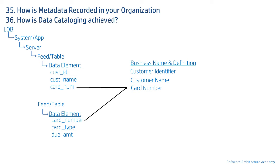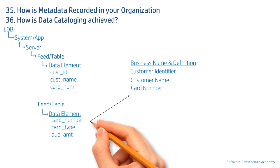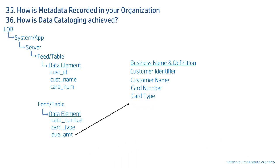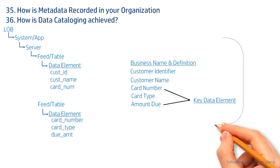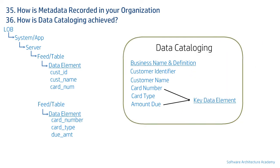A particular data element can exist in hundreds of instances across systems, all having the same business meaning. It is wise to map all these data elements to one business name rather than creating multiple business names. An important exercise is identifying key data elements — known as critical data elements in some organizations. These are fields important to the business or required to be reported to a regulator. This entire process is called data cataloging.